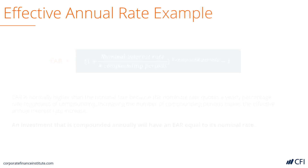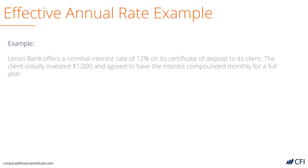Let's look at an example of how to actually calculate this. Imagine that Union Bank offers a nominal interest rate of 12% on its certificates of deposit. A client invests $1,000 in the instrument, which will have interest that compounds monthly for a full year.